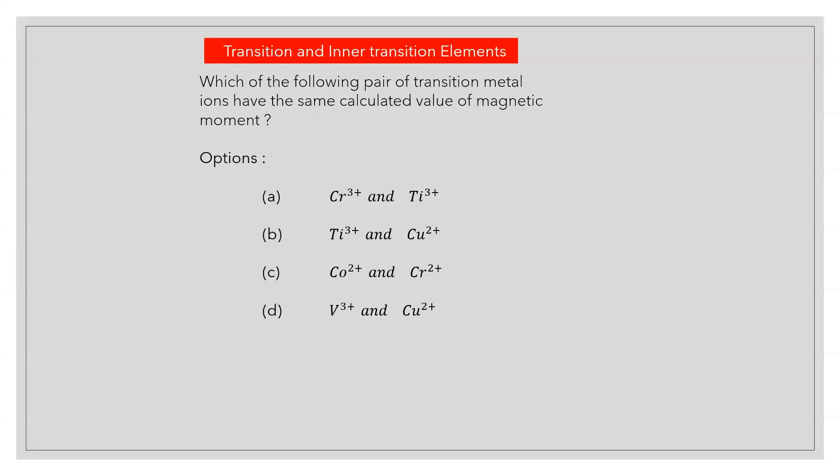Which of the following pair of transition metal ions have the same calculated value of magnetic moment? Answer B: Ti3+ and Cu2+.